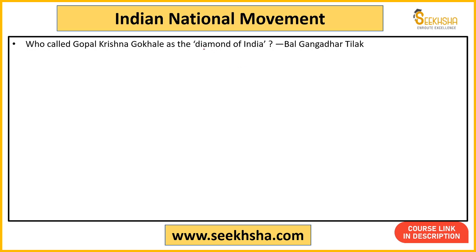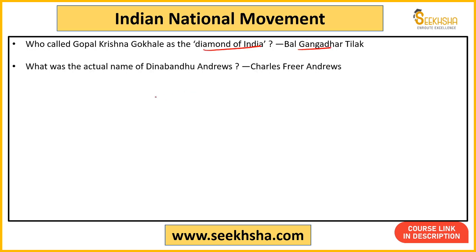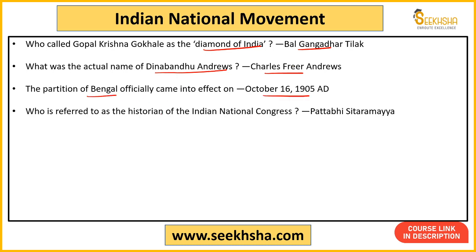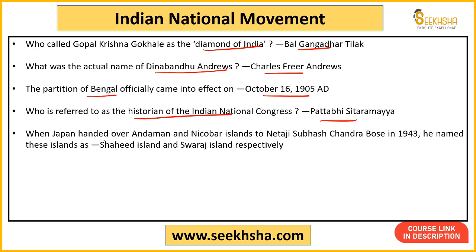G.K. Gokhale was given the title 'Diamond of India' by Bal Gangadhar Tilak. The actual name of Deen Bandhu Andrews was Charles Freer Andrews. The Partition of Bengal officially came into effect on 16 October 1905. The 'Historian of INC' title is given to Pattabhi Sitaramayya. When Japan handed over Andaman and Nicobar Islands to Netaji Subhash Chandra Bose in 1943, he renamed them Shaheed Island and Swaraj Island.